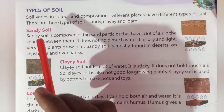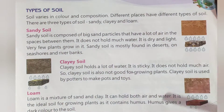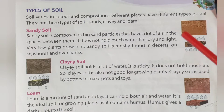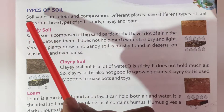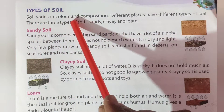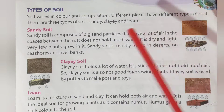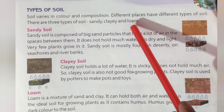Next are the types of soil. There are many types of soil. Soil varies in color and composition. Different places have different types of soil. There are three types of soil: sandy, clay, and loam.